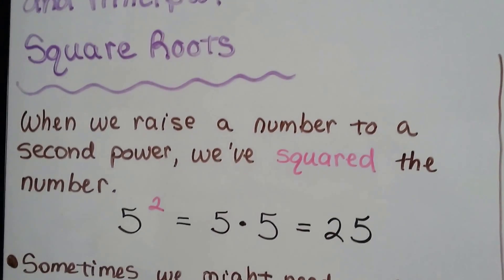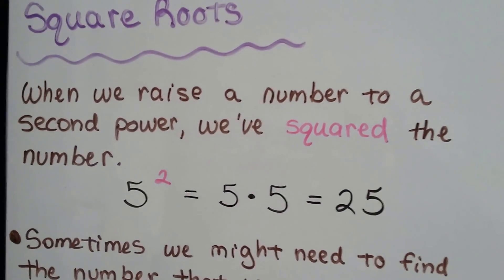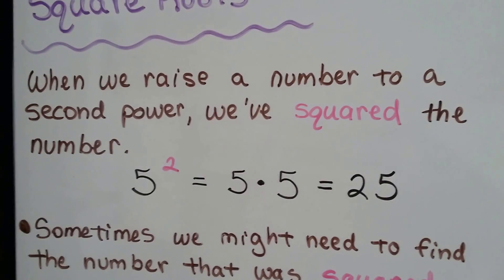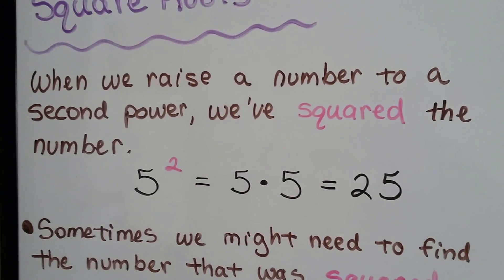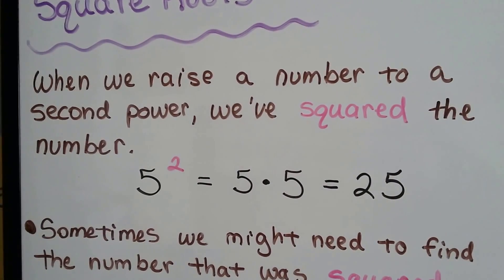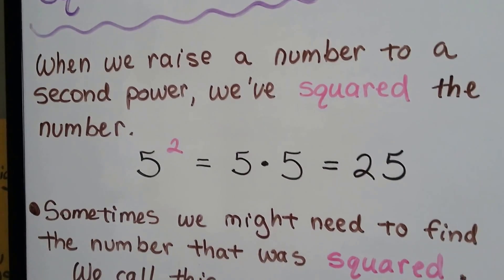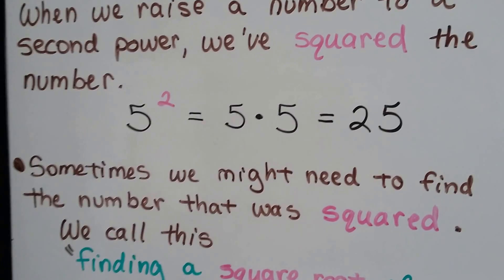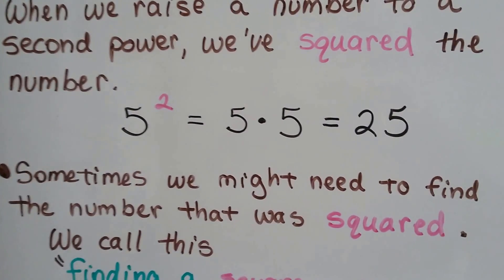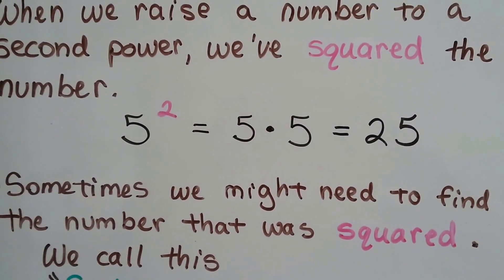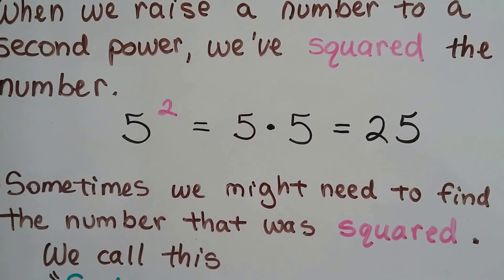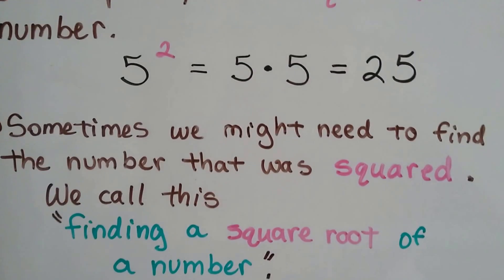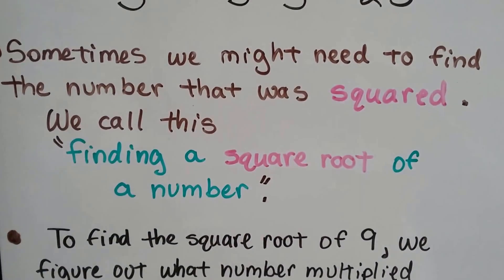When we raise a number to a second power, we've squared the number. So 5 to the second power equals 5 times 5, that equals 25. Well, sometimes we might need to find the number that was squared. So they'll give us the 25 and we'll need to find the 5. We call this finding a square root of a number.